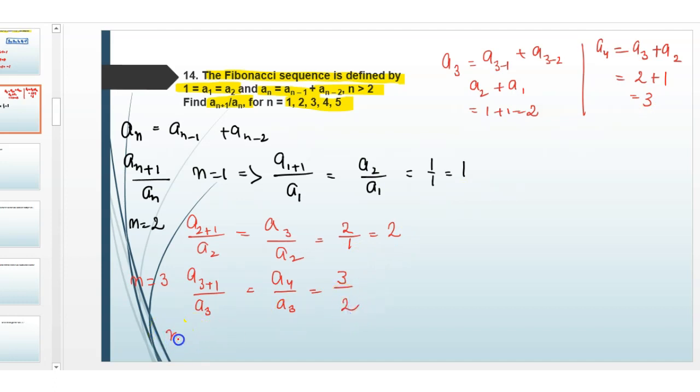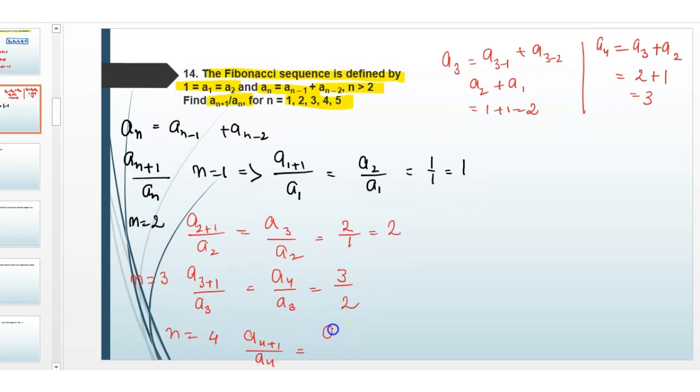For N equals 4, A5 divided by A4. A5 equals A4 plus A3, which is 3 plus 2 equals 5. And A6 is A5 plus A4, which is 5 plus 3 equals 8. So A5 divided by A4 is 5 divided by 3.